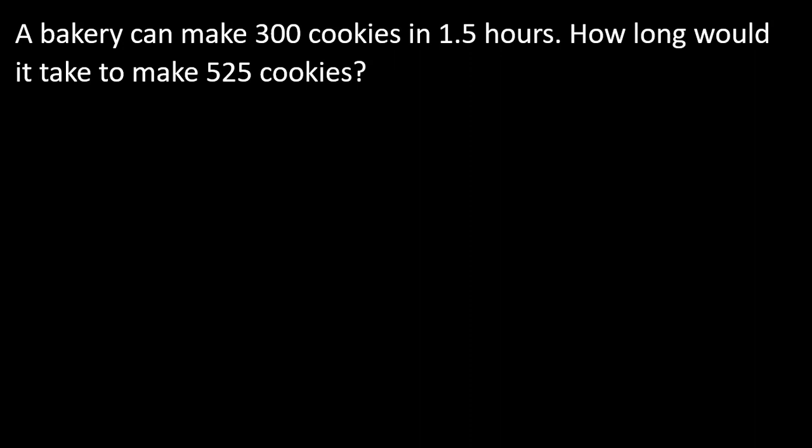A bakery can make 300 cookies in 1.5 hours. How long would it take to make 525 cookies? This is the classic proportion problem. You're given baseline information like 300 cookies in 1.5 hours. Make sure you have a clear structure for how to set up your proportions. I write out cookies to hours to make sure my numbers fit this way.